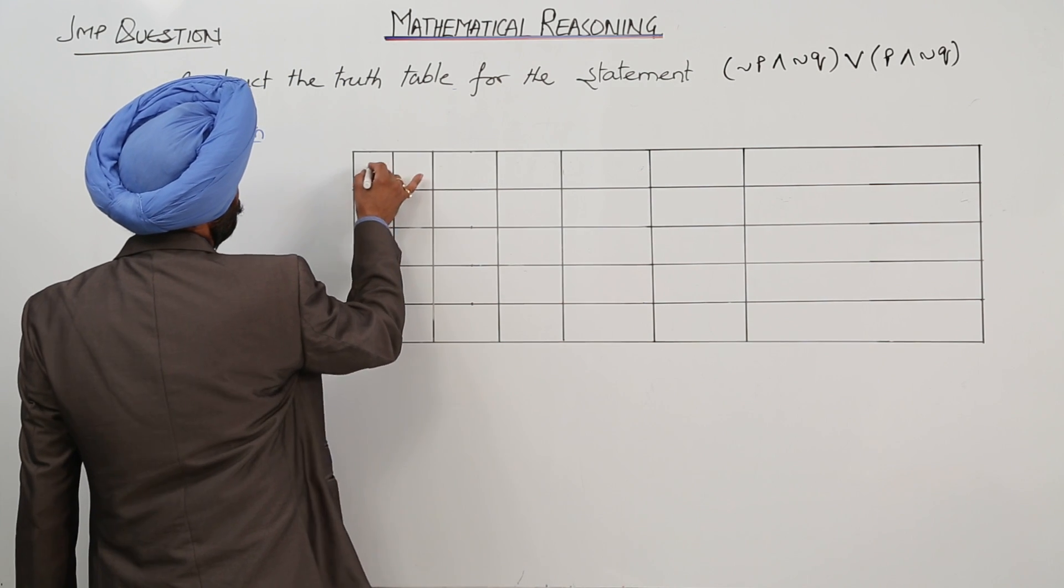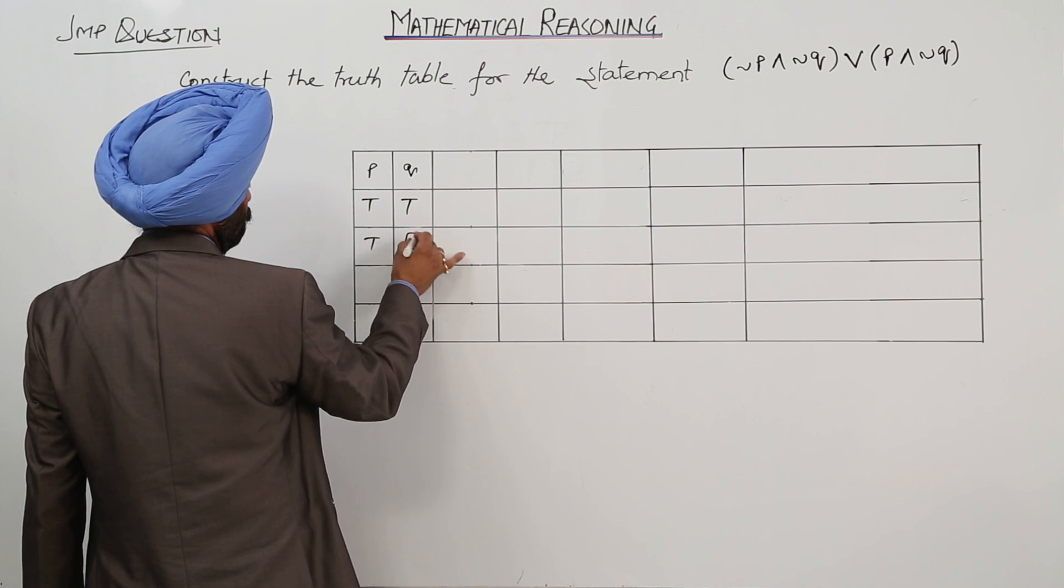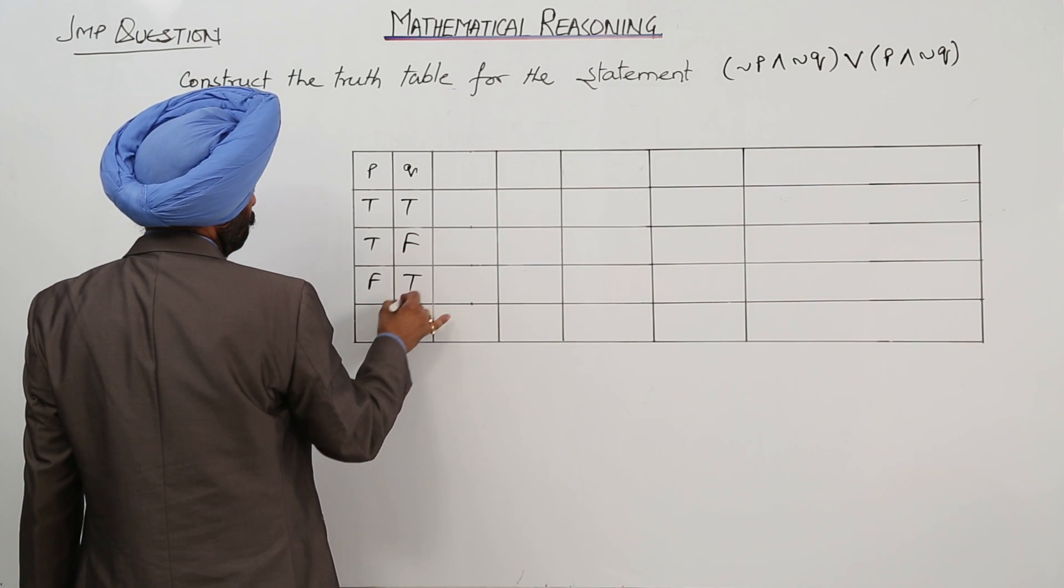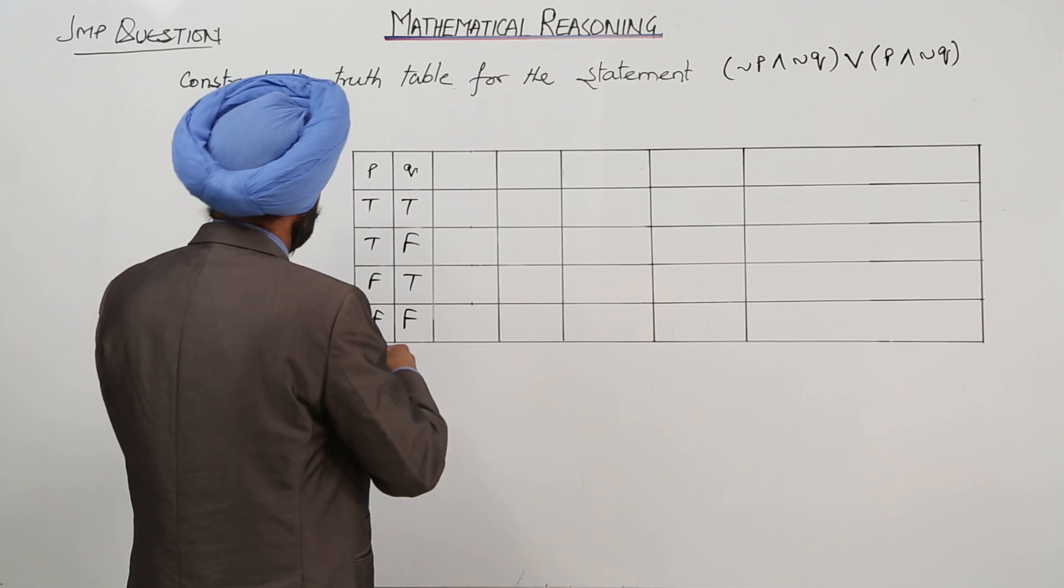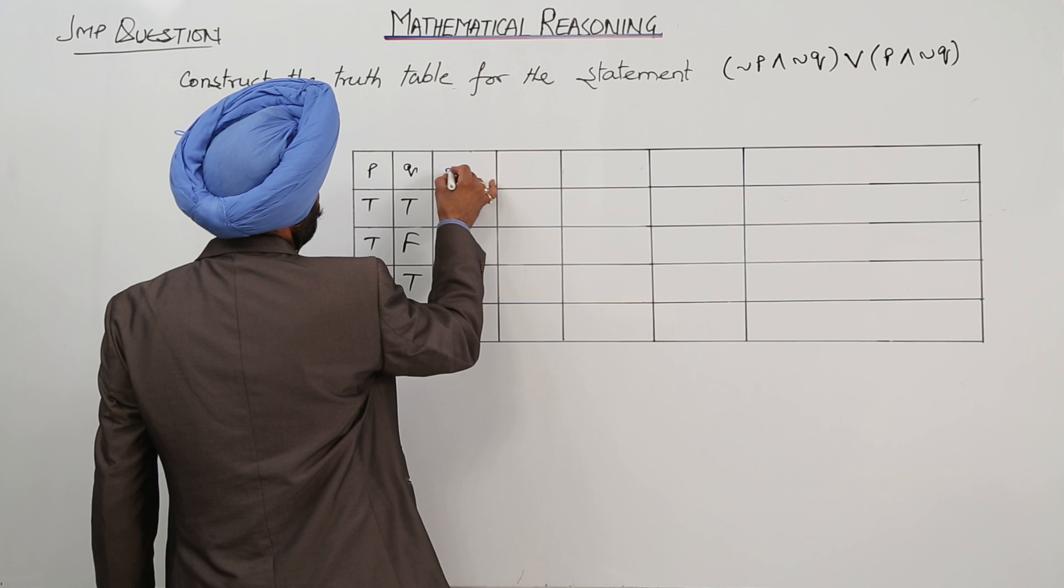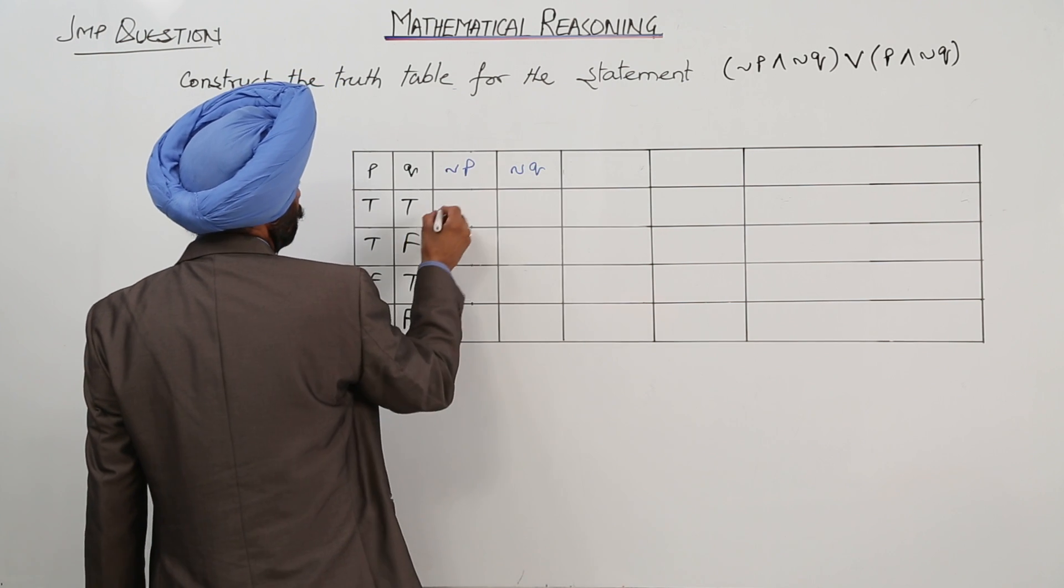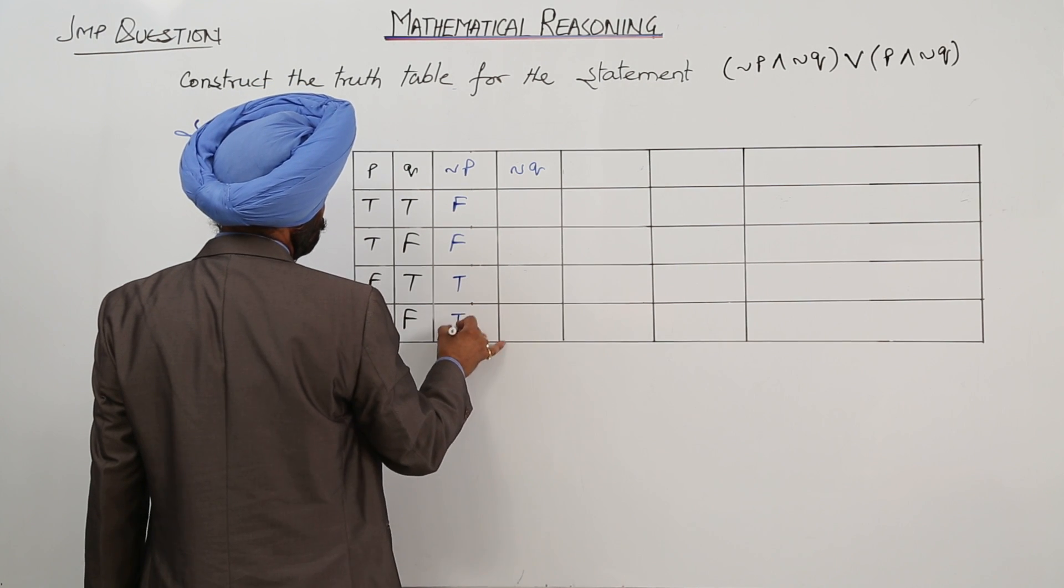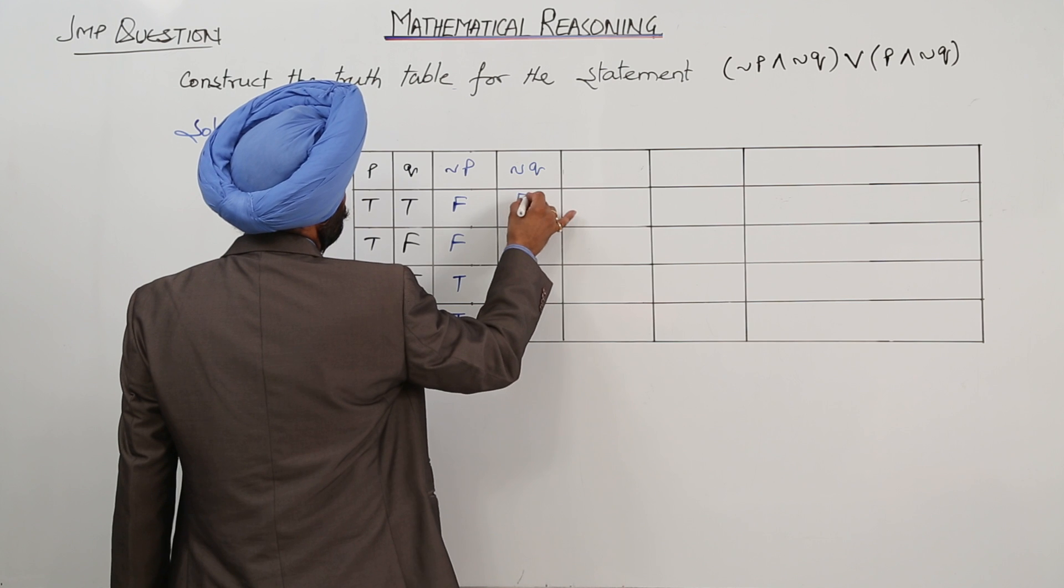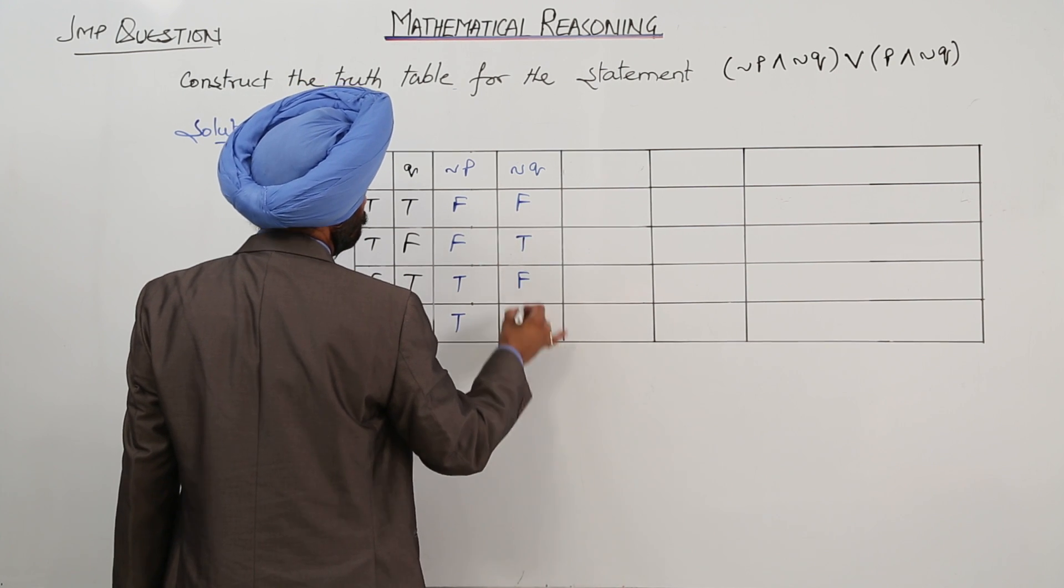P, Q both false. Now negation of P, negation of Q: false false true true, false false true false true.